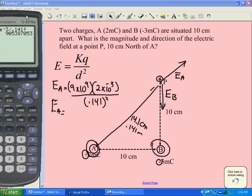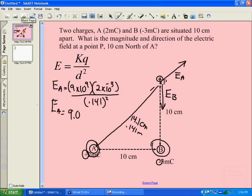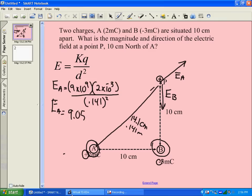We'll hide that one for now. So now we need to figure out, oh, we lost our EA. 9.05, what happened there? Times 10 to the 8, newtons per coulomb. Don't know why that disappeared. Okay, now we'll do the same thing for EB.